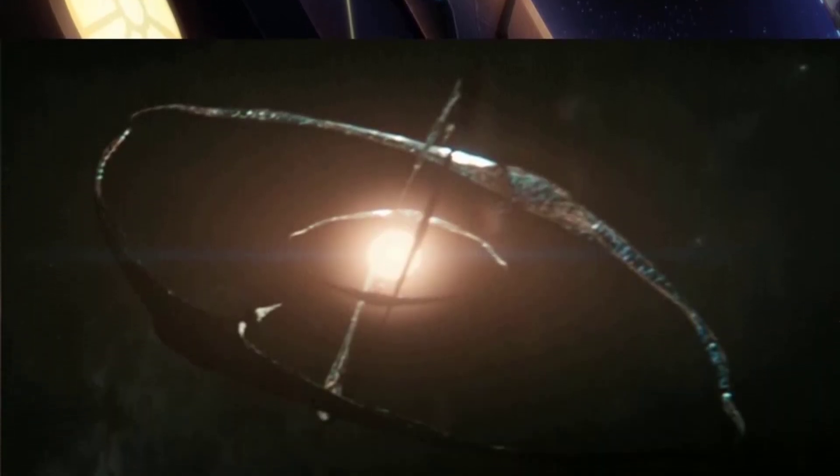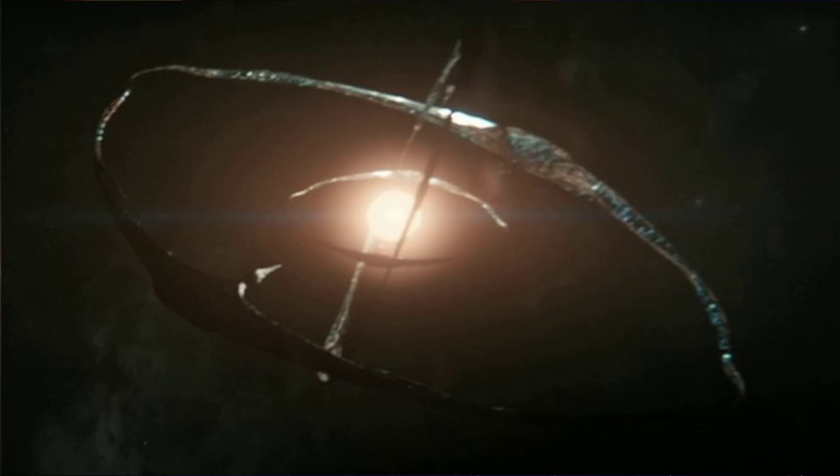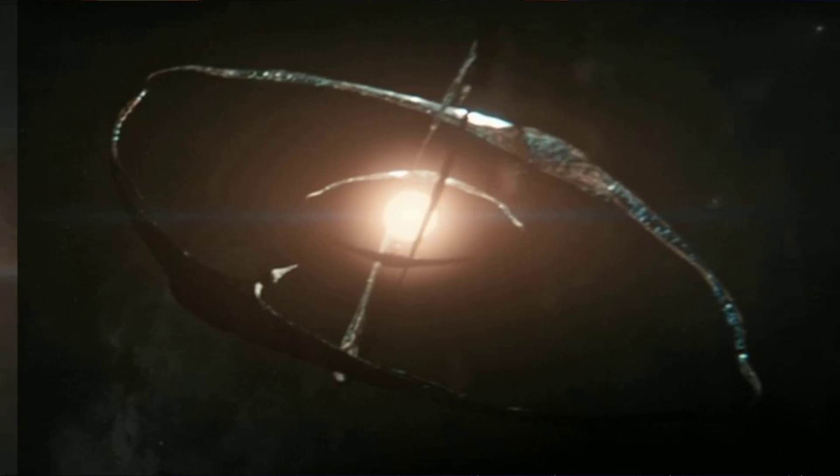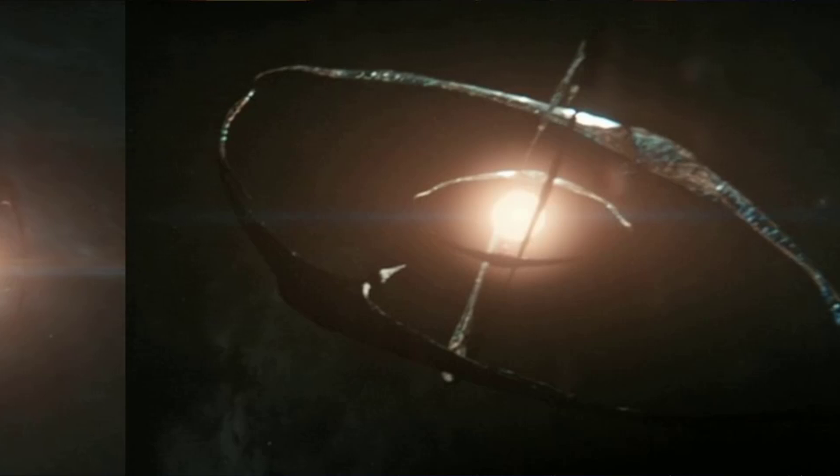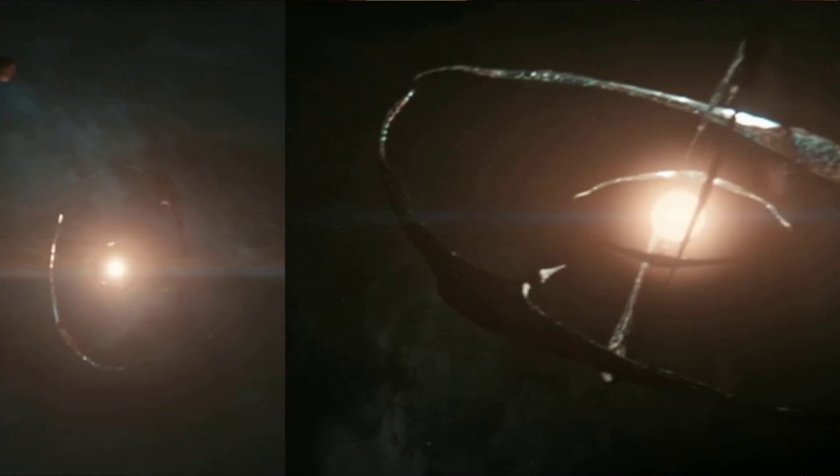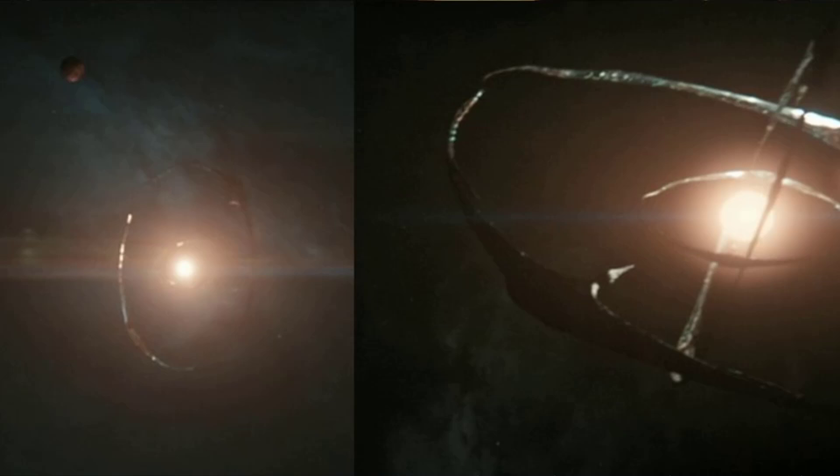Like other ring habitats, Corazonia offers a continuous curved surface that supports cities and natural landscapes, and thus gives its inhabitants a familiar ground to live on even while orbiting in deep space.